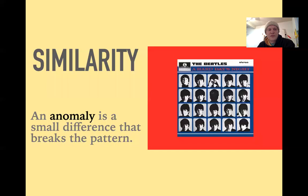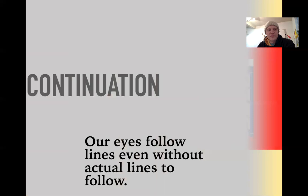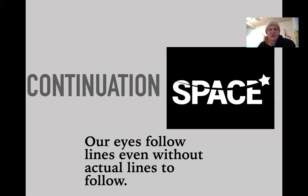See the anomaly? Here's the next one: continuation. Our eyes follow lines without actual lines to follow. In the word 'space,' we've got this star swishing through the scene. There are black-on-white lines actually on the letters, but in between the letters there's no actual line depicted. Our brains connect the dots and we read the whole thing as one continuous line through the entire space shape.